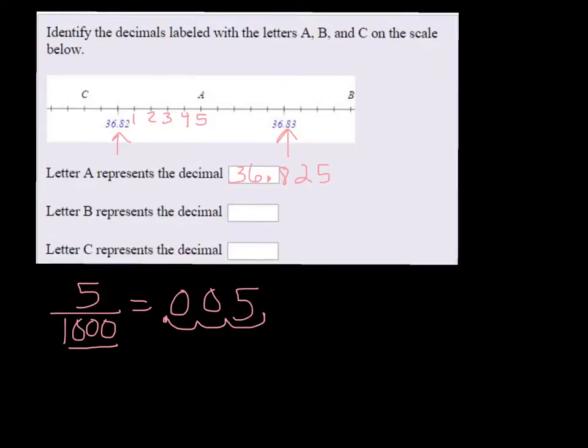Okay, B is, it's going to be 36.83, and then we just have to count how many dashes over. So it's 1, 2, 3, 4. So that one's 4 out of 1000th, so we can just put a 4 there.